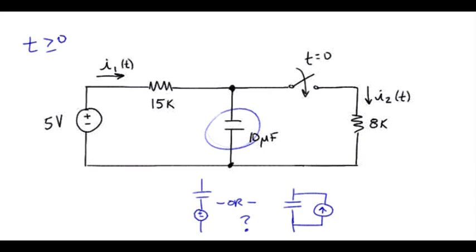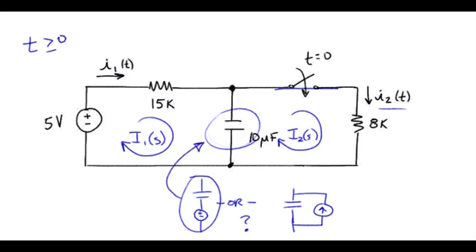We're trying to find essentially a mesh current because that's the same thing as I1. I2 is also a mesh current. If we're doing a mesh analysis it would probably be nicer not to introduce more meshes. So let's use that form for the capacitor.